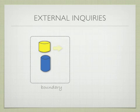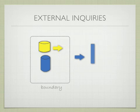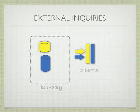All the data that you'd see on an external inquiry comes from a file. In this case, you have a blue and a yellow file. Everything on that external inquiry exists on those tables. This would be an example of two data elements and two FTRs.